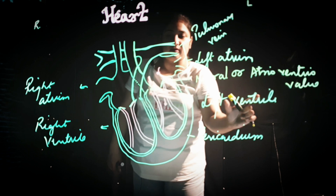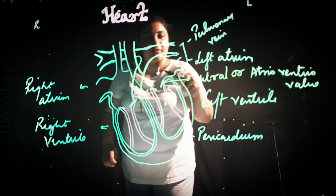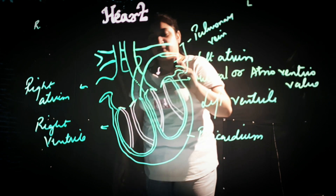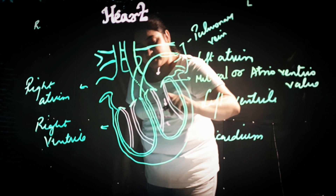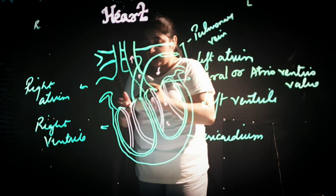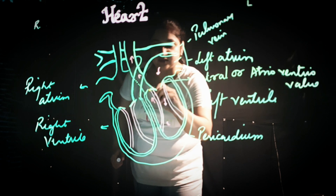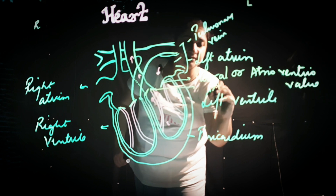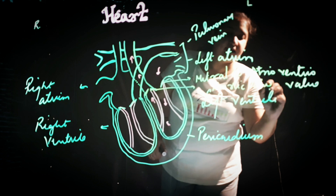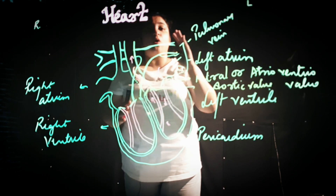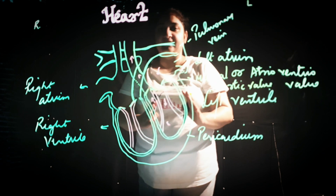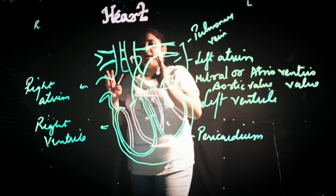As the name suggests, the atrioventricular valve is situated between the atrium and the ventricle. Blood passes from the atrium to the ventricle with the help of this mitral valve. Then the blood goes from the ventricle to the aorta and to different parts of the body through the aortic valve. The body receives oxygenated blood from the heart through the aortic valve.